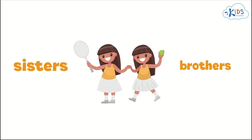Now, let's look at the last picture. There is a man reading a book with a boy. Pay attention to the arrow — is it pointing to a sister or a father? A father. Good job! Congratulations! You've completed the worksheet. Awesome work! Goodbye!